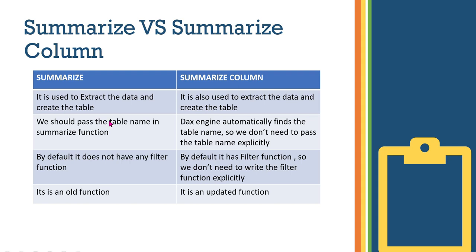So there are some differences. In SUMMARIZE, by default it does not have a filter function built into the syntax. In SUMMARIZECOLUMNS, however, by default there is a filter function — so we don't need to write the filter function explicitly. That is one of the key differences.